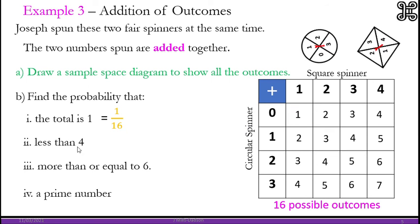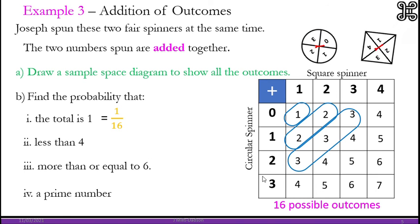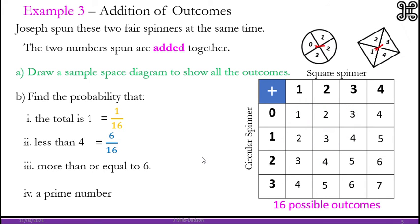What about the total is less than 4. Less than 4. These are all less than 4. If you count them, there are 6. So 6 out of 16.